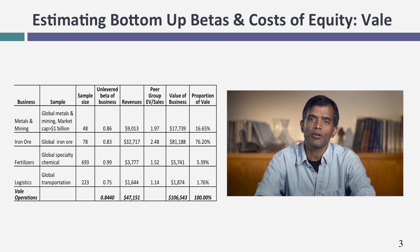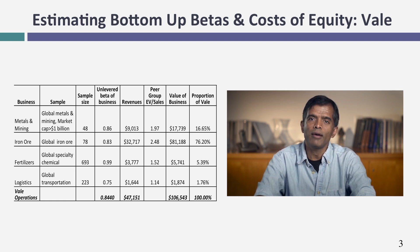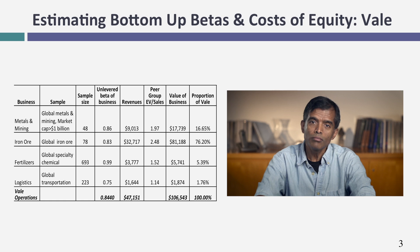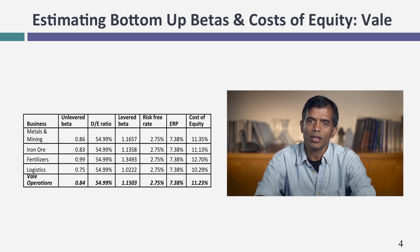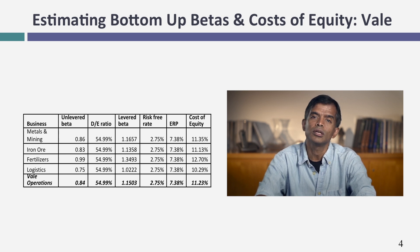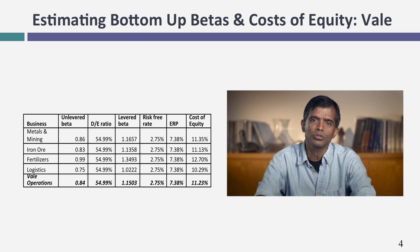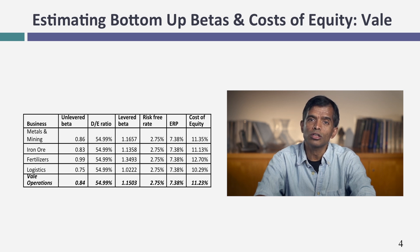Based on my estimates, Vale is predominantly an iron ore company — about 76% iron ore, 24% everything else. The weighted average of those unlevered betas, which is about 0.84, is the unlevered beta for Vale's operations. I then use those unlevered betas in conjunction with the debt-to-equity ratio. Unlike Disney, where I allocated debt across different businesses, for Vale I used the same debt-to-equity ratio of about 55% across all businesses, arriving at a levered beta and a cost of equity for Vale.